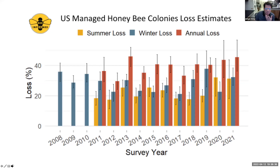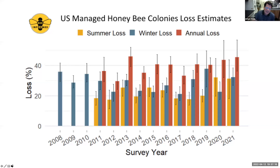We are experiencing levels of mortality that exceed 40%, and this has been going on for the last decade. Varroa is the main factor, but there are other factors — pesticides, loss of habitat, modernity. We have all these new subdivisions popping up and farmers plowing their fields close to the roads, we don't have our fence rows anymore. So there's a lot of factors attributed to this.